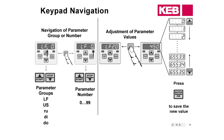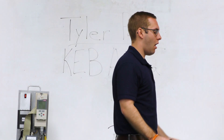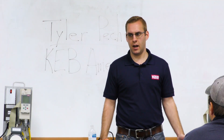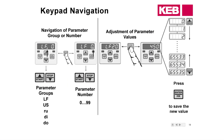A couple of common parameter groups: LF is where you're going to spend most of your time, and US for basic setup — you'll spend some time in the US group as well, including some advanced programming functionality. The RU parameter group is used for diagnostics only; all of those parameters are read-only and can't be changed. We also have the DI and DDO groups, where you set your inputs and outputs.